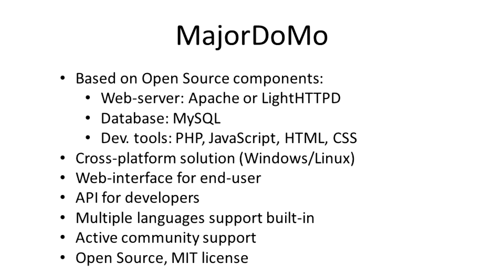Majordomo provides a web interface for the user and an API for integration with any other systems and devices. The platform is open source and the code can be downloaded from GitHub. The license for the software is MIT, so basically you can do anything you want with it in commercial or non-commercial projects, keeping the original authorship information. An important note is that Majordomo is not a ready product in a box — it is a tool or platform to be used in building solutions for end users.